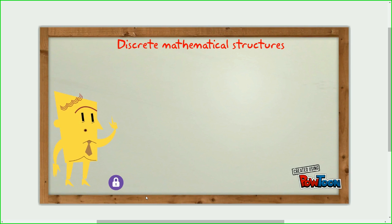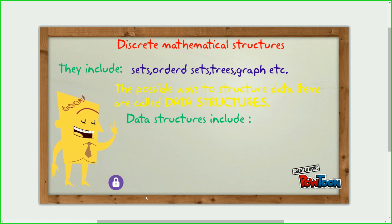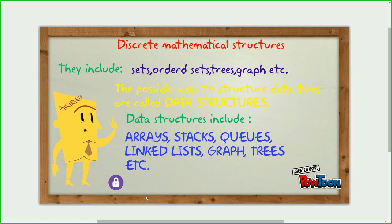So firstly discrete mathematical structures. They include sets, ordered sets, trees, graphs etc. The possible ways in which data items are structured define different data structures such as arrays, stacks, queues, linked lists, graphs, trees etc.